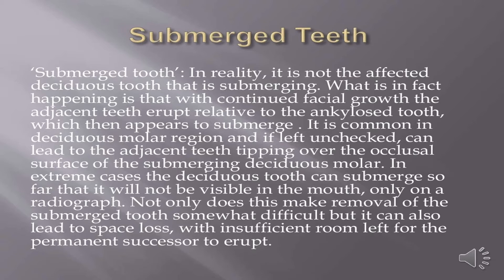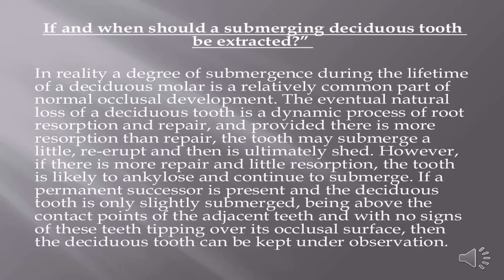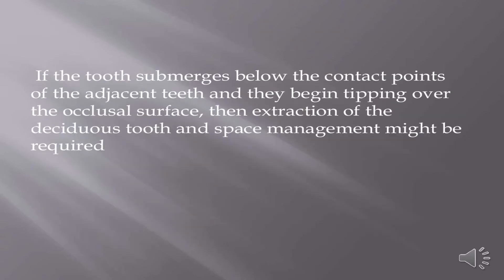In extreme cases, the deciduous tooth can submerge so far it is only visible on a radiograph, leading to space loss with insufficient room for the permanent successor to erupt. A degree of submergence during the lifetime of a deciduous molar is a relatively common part of normal occlusal development. The natural loss of a deciduous tooth involves dynamic root resorption and repair; if there is more resorption than repair, the tooth may submerge a little, re-erupt, and then be shed. However, if there is more repair and little resorption, the tooth is likely to ankylose and continue to submerge. If a permanent successor is present and the tooth is only slightly submerged — above the contact points of adjacent teeth with no signs of tipping — it can be kept under observation. If the tooth submerges below the contact points and adjacent teeth begin tipping over its occlusal surface, extraction and space management may be required.